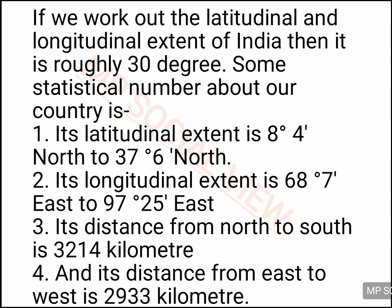Then we saw the difference between the north-to-south and the easternmost-to-westernmost distances of India. The distance from the northernmost point to the southernmost point of India is 3,214 km, and the distance from the easternmost to the westernmost side is 2,933 km. So the question arises: if the number of latitudes and longitudes are the same, why is the distance from north to south and east to west not the same? Why is there a difference — one is 3,214 and the other is 2,933?